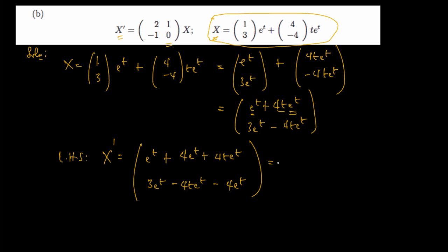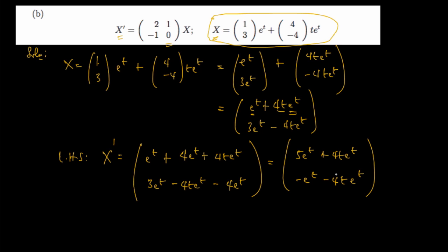When we add and simplify the first entry: e^t + 4e^t + 4t·e^t gives 5e^t + 4t·e^t. Simplifying the second entry: 3e^t - 4t·e^t - 4e^t gives -e^t - 4t·e^t. So the left-hand side equals the column vector [5e^t + 4t·e^t, -e^t - 4t·e^t].